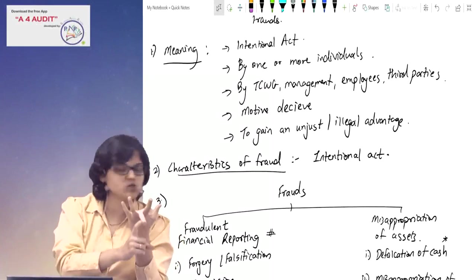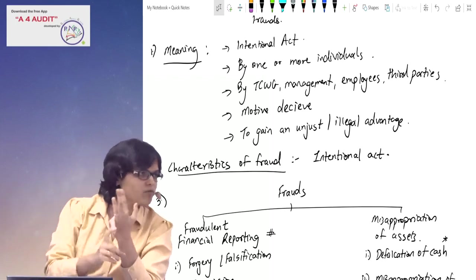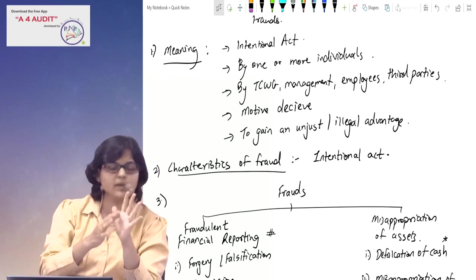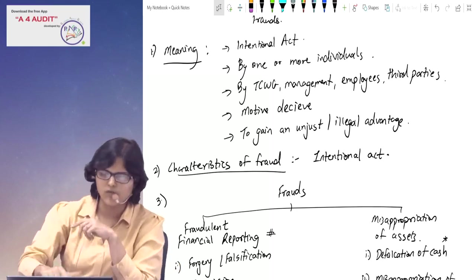Intentional act by one or more individuals - TCWG, management, employees, third parties - anyone can do it. Motive to deceive the other party. What will you get? Gain - illegal or unjust gain. That is the meaning of fraud.